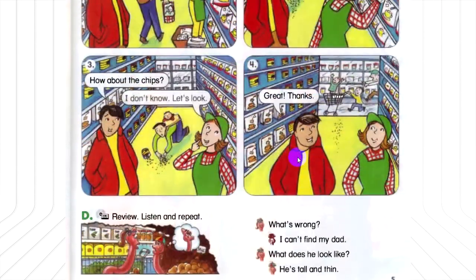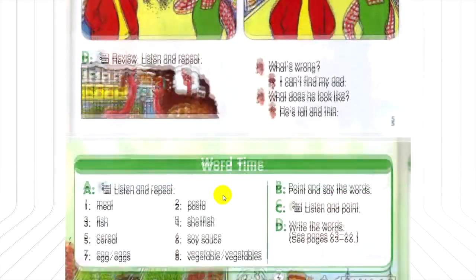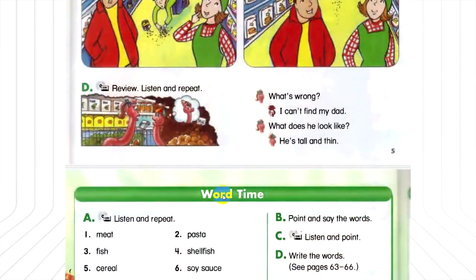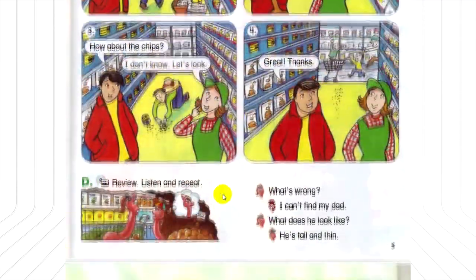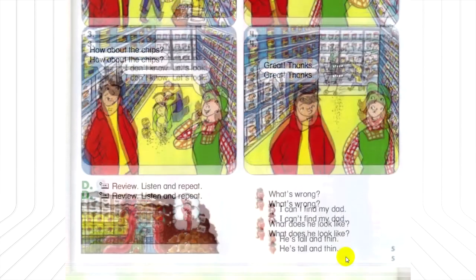D. Review. Listen and repeat. What's wrong? I can't find my dad. What does he look like? He's tall and thin.